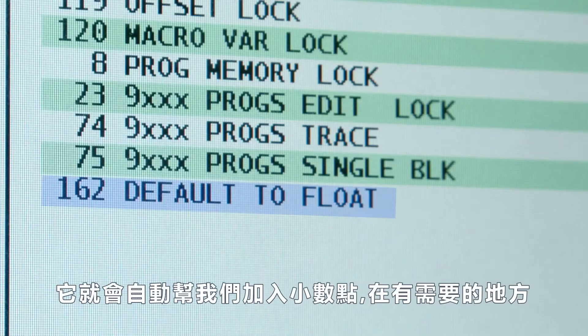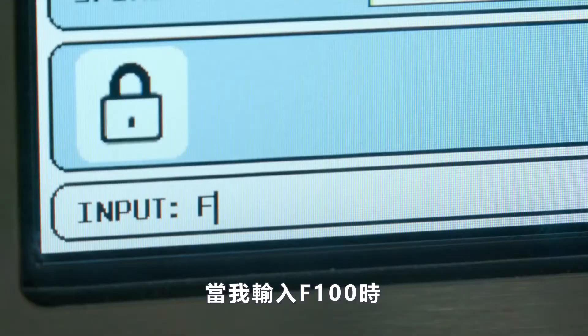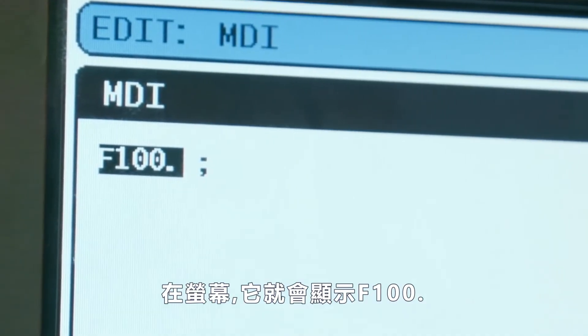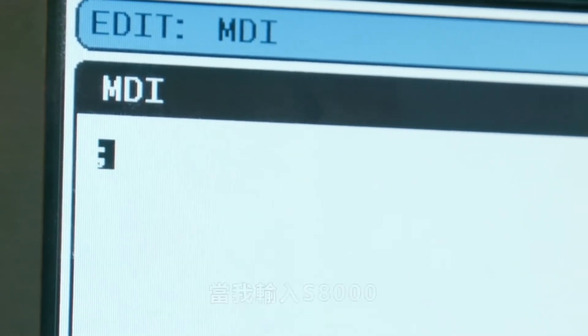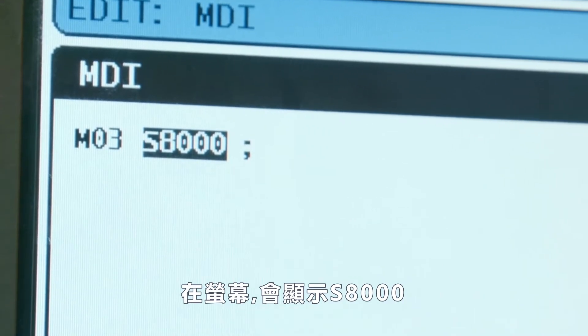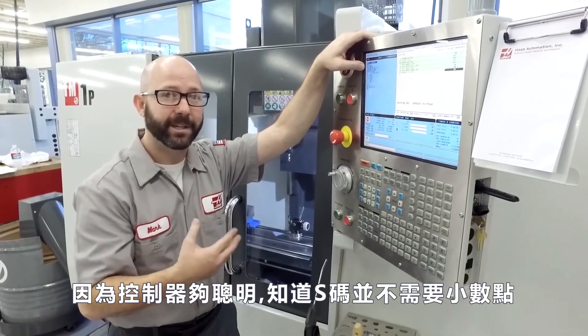This adds decimal points to our code as we enter it when appropriate. In my program I entered F100 and it shows up on my screen as F100 decimal point. I also entered S8000 and it left it alone. It inputted as S8000 because the control is smart enough to know that S codes don't require decimal points.